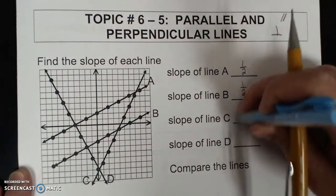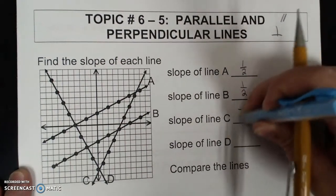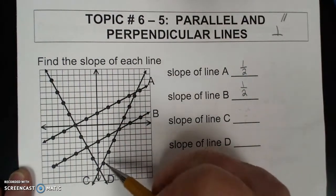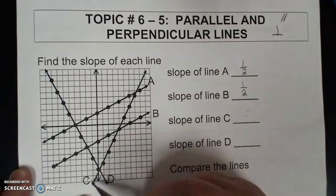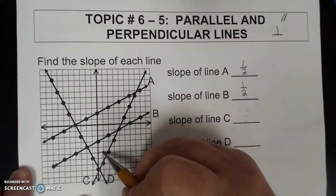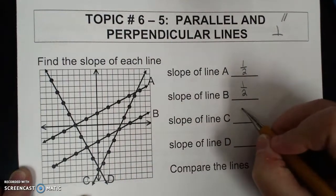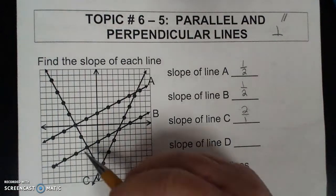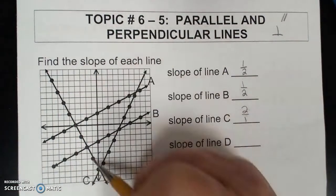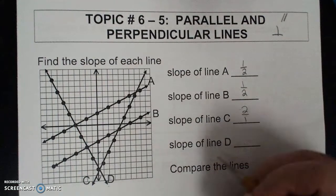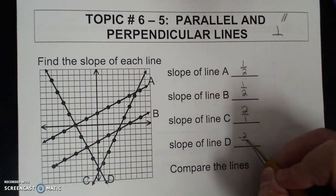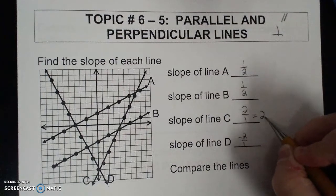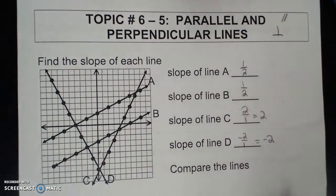So C is a positive slope, which is up 2 over 1, so slope of C is 2. And D is this line right here — that's down 2, right 1 — so slope of D is negative 2.